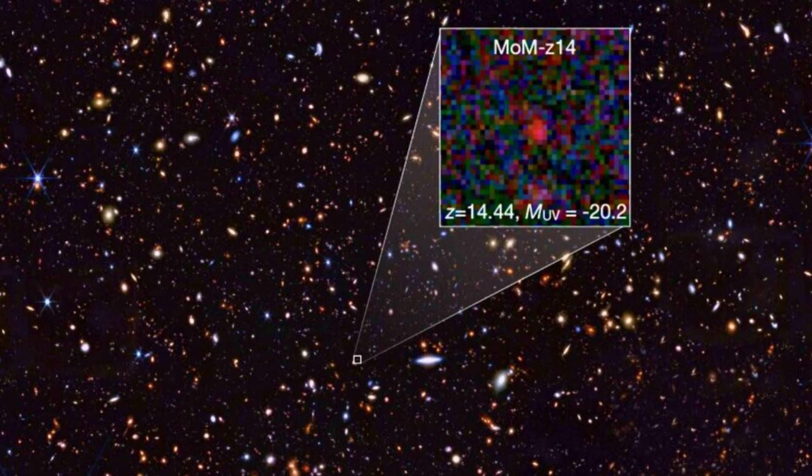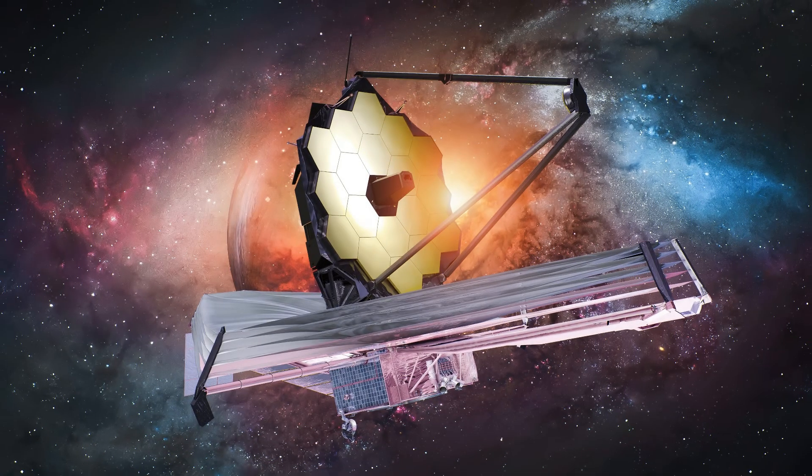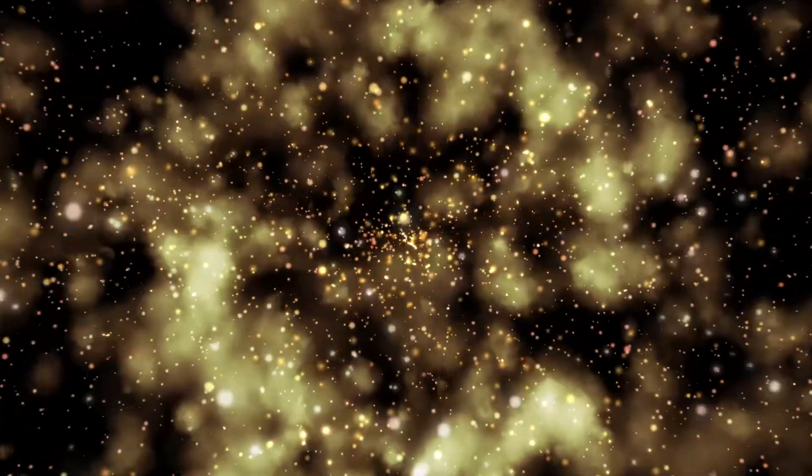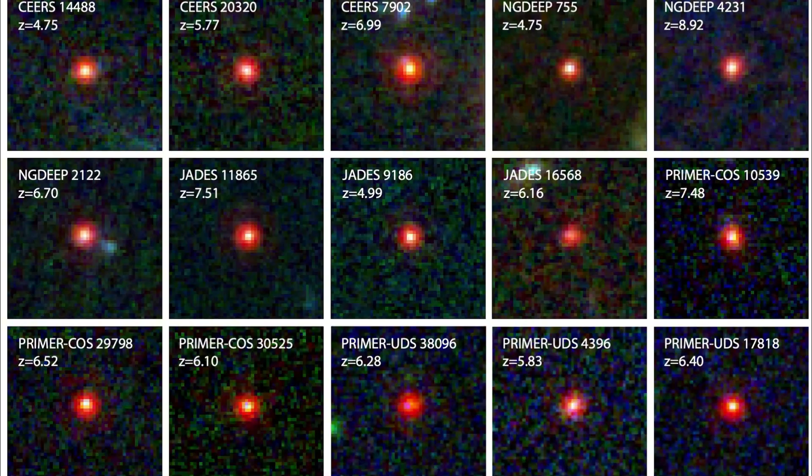This tiny red smudge left when the universe was just 2% of its current age. JWST measured it at Z equals 14.44, light from approximately 280 million years after the Big Bang. It's not a glitch. It's a galaxy. And it just became the farthest confirmed one we've ever seen.